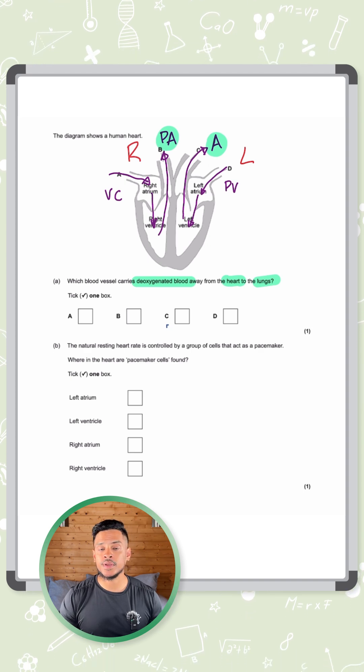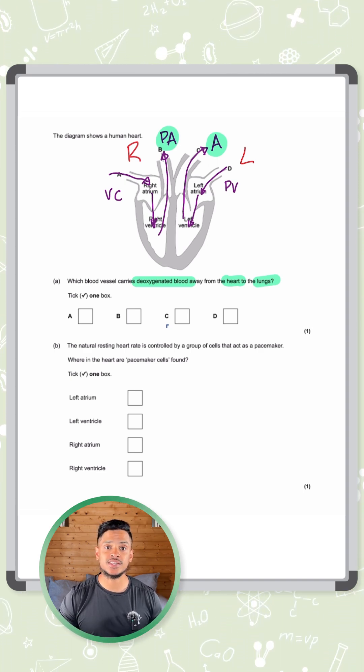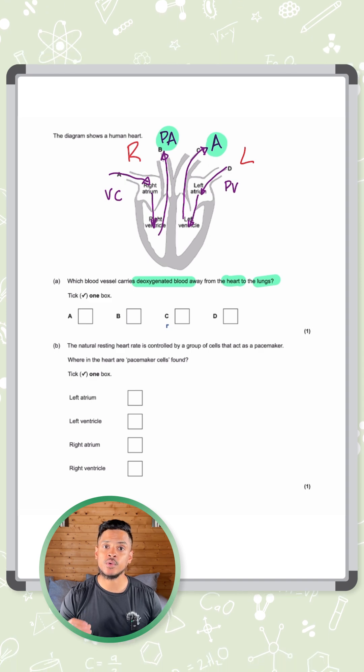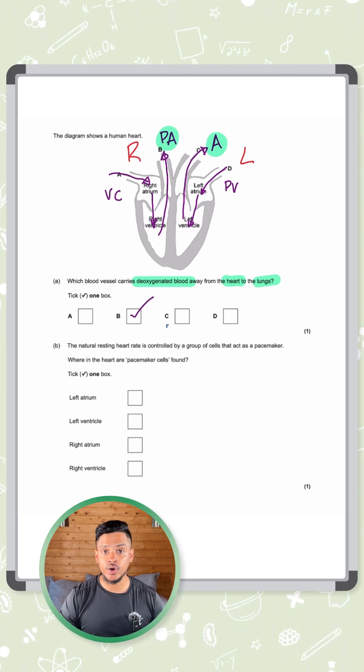That's where it gets reoxygenated. So out of the pulmonary artery, you have deoxygenated blood which needs to get reoxygenated. That's why it goes to the lungs. So the answer here is B, the pulmonary artery.